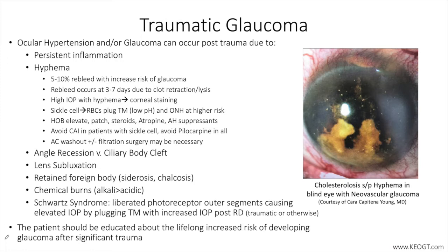The elevation in intraocular pressure can occur immediately after trauma, as is the case with bleeding, or decades later, as can be the case with angle recession. The risk of development of glaucoma post-blunt trauma has been reported at 3.39% and 2.67% after penetrating injuries.